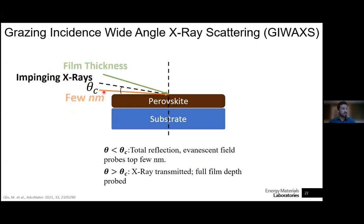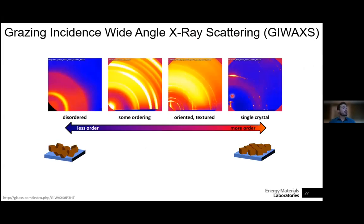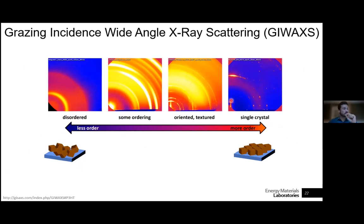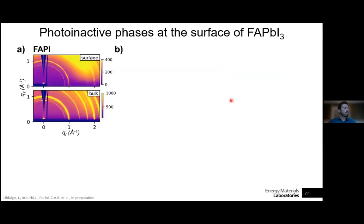Increasing the angle above the critical value allows probing deeper into the bulk. In GIWAXS, a very disordered material produces a full diffraction ring because crystallites have all possible orientations with respect to the substrate. As order increases, crystallites align in the same direction, and in the limit of a single crystal, a specific plane produces a single diffraction spot in the GIWAXS diffracted realm.